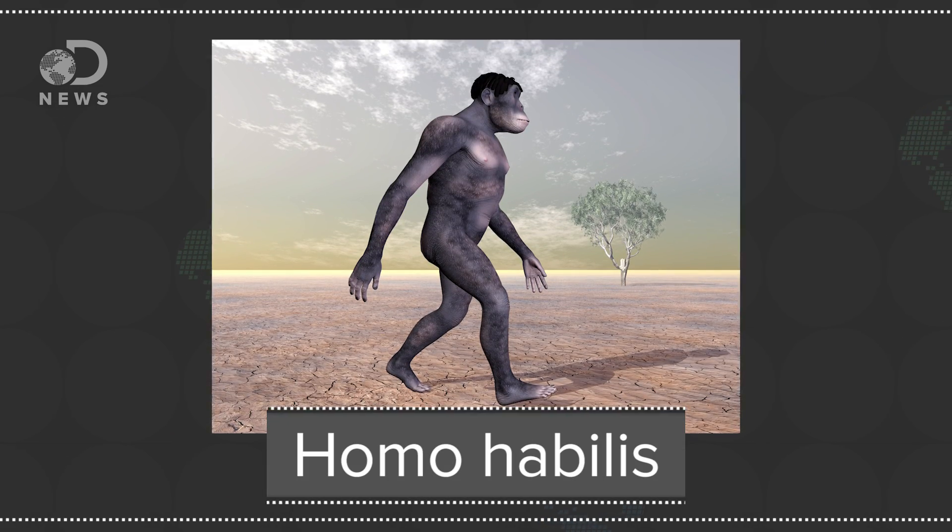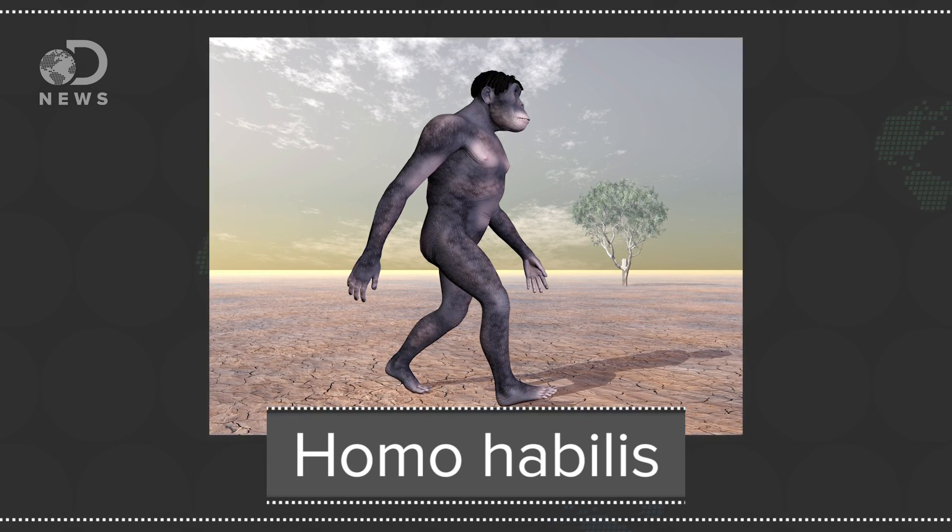Fast forward to Homo habilis, an ancestor who lived 1.76 million years ago. And her feet looked a lot like ours do now. We traded in our opposable toes for shorter toes overall and gained an arch in our foot.